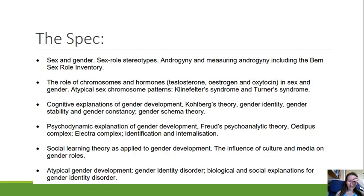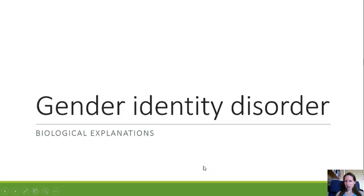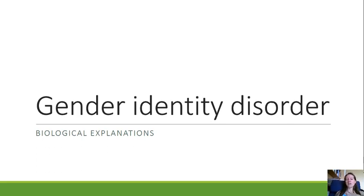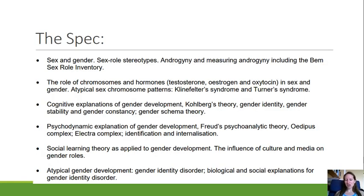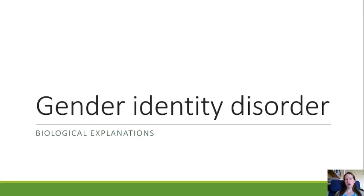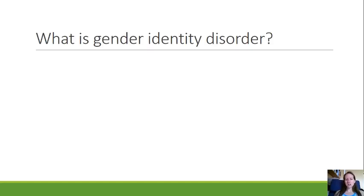This is AQA Psychology and we're looking at the topic of gender. In this particular video we're looking at gender identity disorder and biological explanations. Before I start, you should be aware the term gender identity disorder is a little outdated now. It's most recently been replaced with the term gender dysphoria, as it was felt the term 'disorder' was creating stigma. However, because that's what the spec calls it, I'm going to continue to use that term. So, what is gender identity disorder?